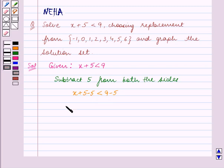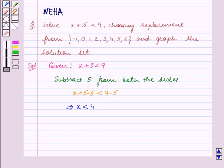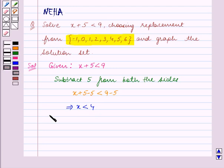This implies x < 4. Now we are given that the replacement set is the set containing the elements -1, 0, 1, 2, 3, 4, 5, 6.